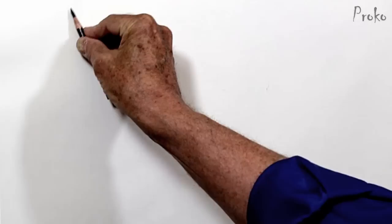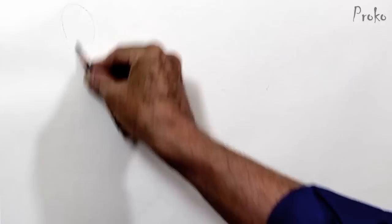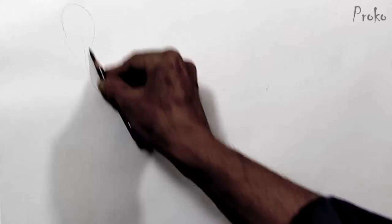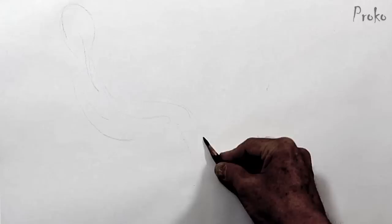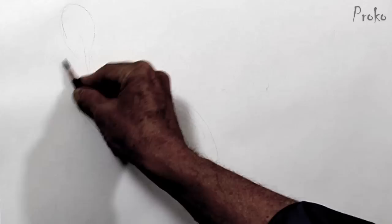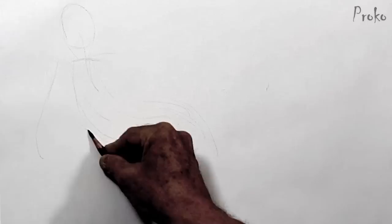Generally when I'm starting, whether I'm doing fast poses or long poses, it makes absolutely no difference. My primary beginning is to focus on getting a simple gesture. What I'm doing with the gesture is I'm leading the eye through the drawing — just feeling the flow of how it goes. And when I do this, I'm really doing a sort of rhythm.